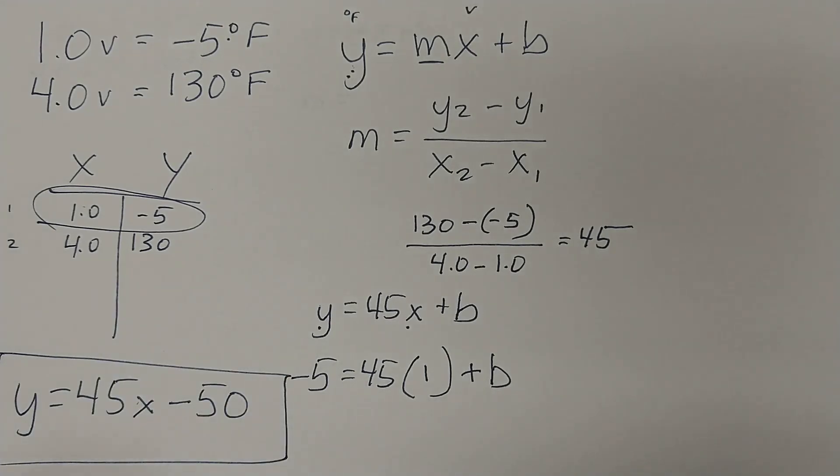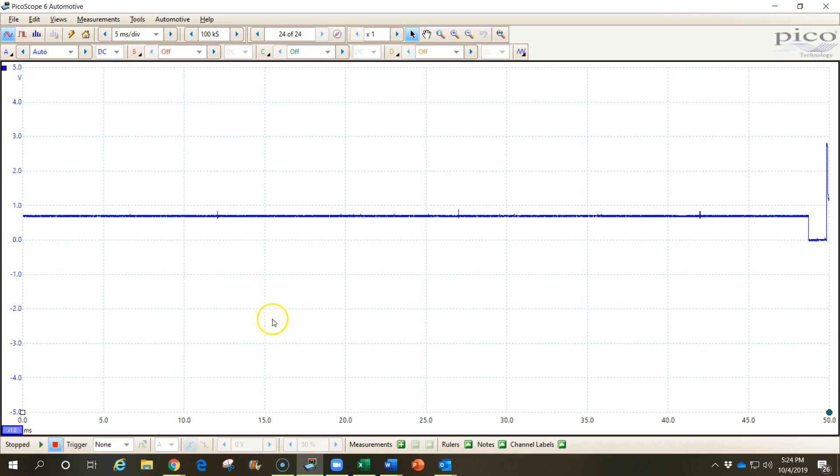Okay? By finding that linear equation, now we can go plug this information into our data acquisition software. And when we pick up the voltage from this sensor, it can automatically turn this into degrees Fahrenheit for us so that we can use this. Okay, now that we have that linear formula, we would come over here to our data acquisition software. This is the PicoScope software.